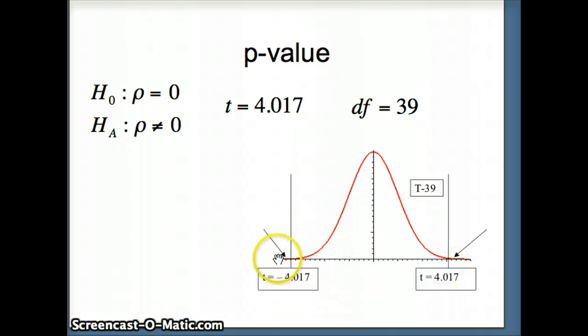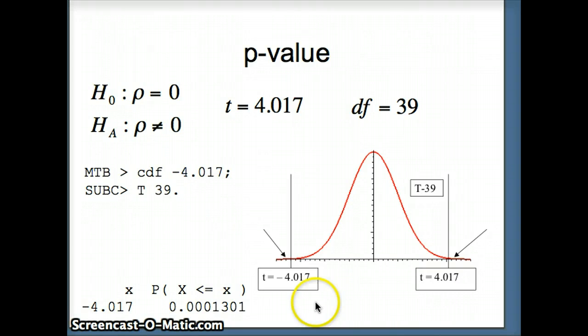We're going to ask Minitab to give us the area to the left since CDF always gives me the area to the left. CDF negative 4.017, a T with 39 degrees of freedom. And it gives me about 0.0001. So this small bit is 0.0001. That small bit is 0.0001. And so our P value will be about 0.0002.